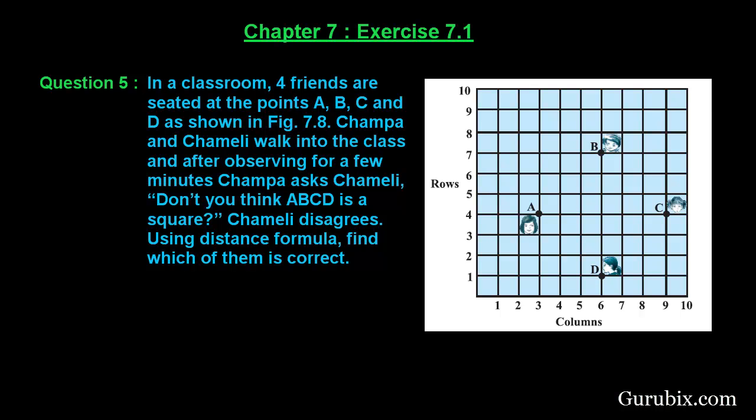Welcome friends. Let us solve question number 5 of exercise 7.1 of chapter 7. The question says: in a classroom, four friends are seated at the points A, B, C and D as shown in the figure. Champa and Chameli walk into the class and after observing for a few minutes, Champa asks Chameli: don't you think ABCD is a square? Chameli disagrees. Using the distance formula, find which of them is correct. This is a very interesting and important question for examination purposes.